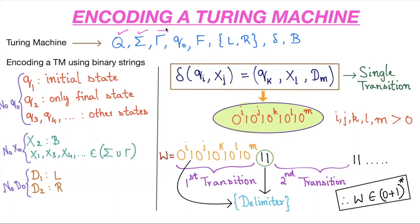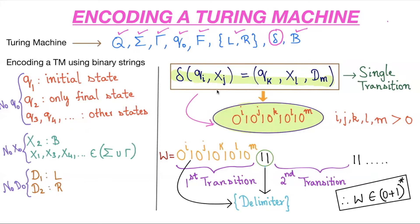We have defined the set of states, the input symbols, the tape symbols, the initial state, the final state, left and right directions, and the blank symbol. Now I only need to define what a transition function is. Based on the transition function we can define all Turing machines. Here I have given one transition function: from current state Q-i on input symbol X-j, it goes to a new state Q-k, the input symbol becomes X-l, and the direction will be D-m.